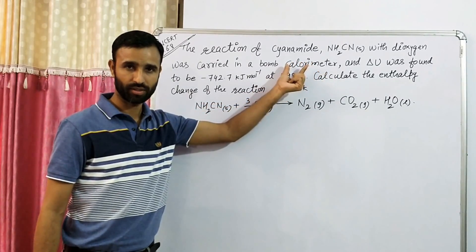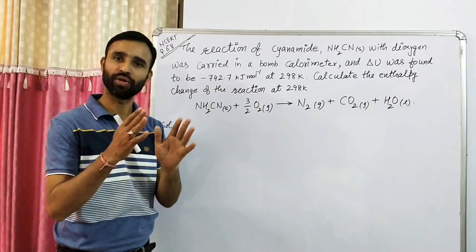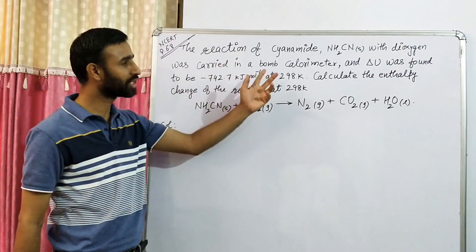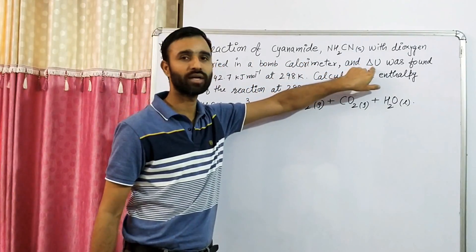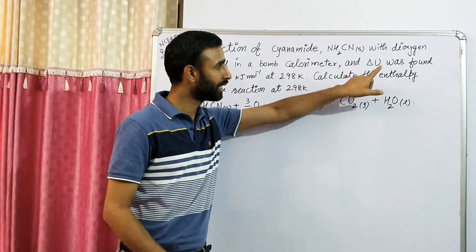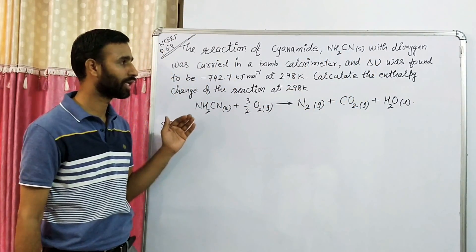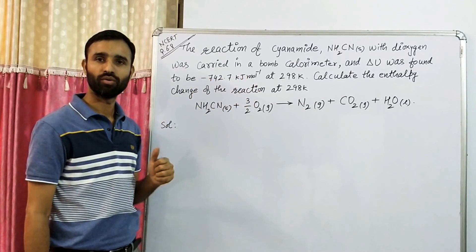Now what is a bomb calorimeter? Actually, a bomb calorimeter is one in which volume is fixed, volume is constant. So energy change in a bomb calorimeter is known as internal energy change, delta U. It is defined as the amount of energy change at constant volume.